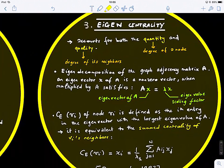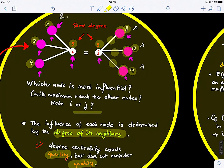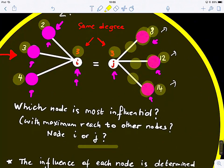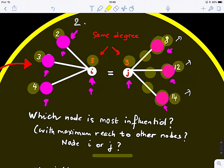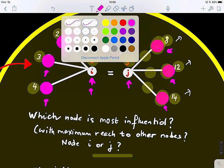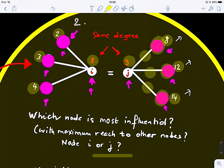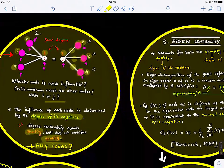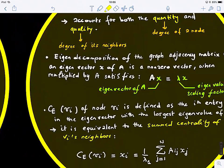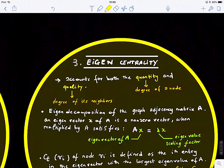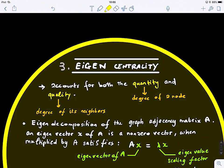Another solution: how can we take into account the degree of a node and also the degree of its neighbors? We want to define a centrality of a particular node that depends on the centrality of its neighboring nodes. This centrality was introduced to solve that problem — it's called eigencentrality, or eigenvector centrality. It accounts for both quantity, the degree of a node, and quality, the degree of its neighbors.